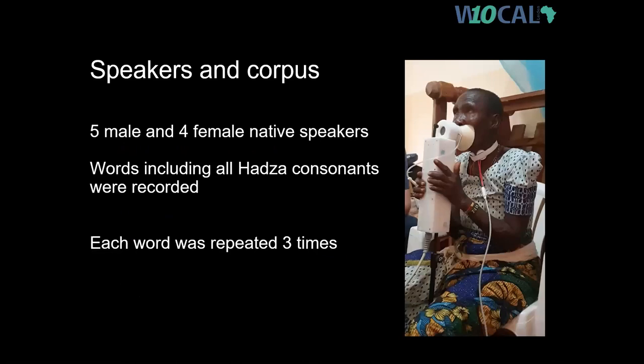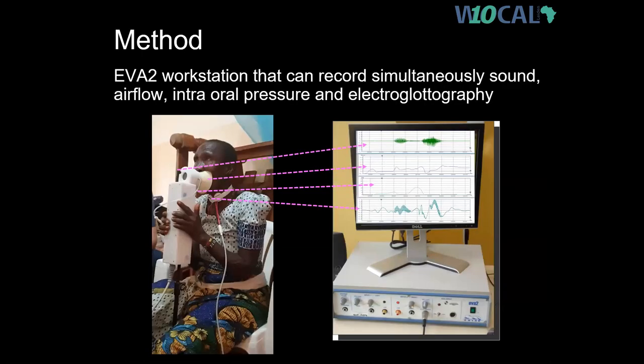The speakers and corpus used for this study consisted of five male and four female native speakers. Words including all Hadza consonants were recorded, and each word was repeated three times. The method used for this study employed an EVA2 workstation that can record simultaneously sound, airflow, intraoral pressure, and electroglottography.